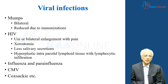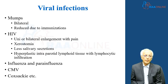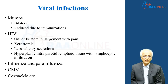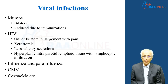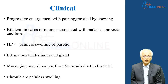Coming to viral infections, mumps is very common and bilateral — though we don't see it much after immunization schedules. HIV produces unilateral or bilateral enlargement of the parotid gland without pain, causing xerostomia, reduced salivary secretion, and hyperplastic intraparotid lymphoid tissue or lymphocytic infiltration. Other viral diseases include influenza, para-influenza, CMV, and coxsackievirus.